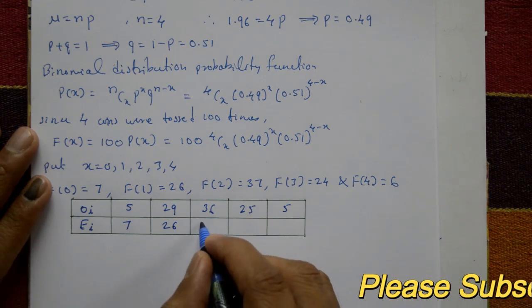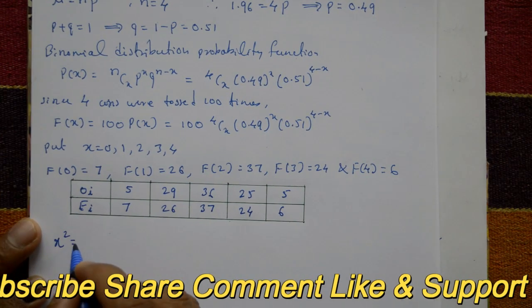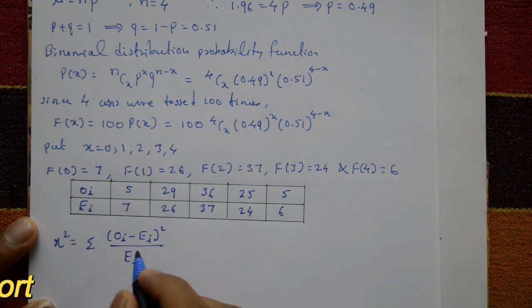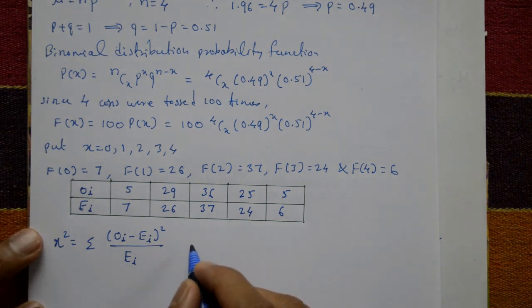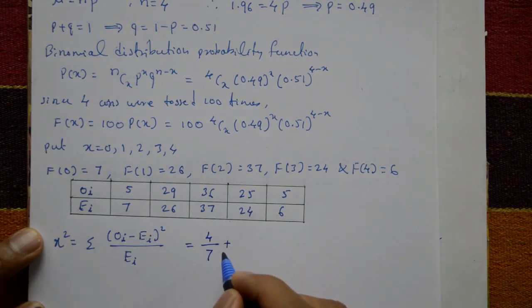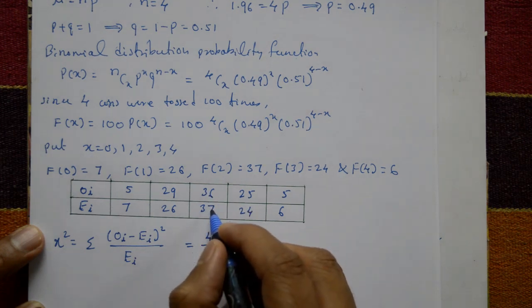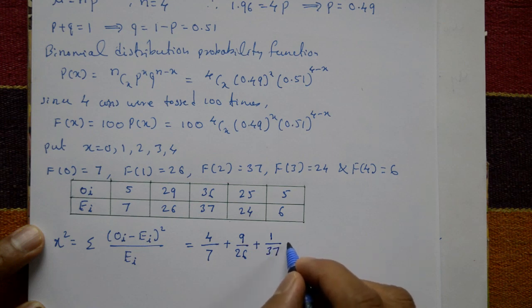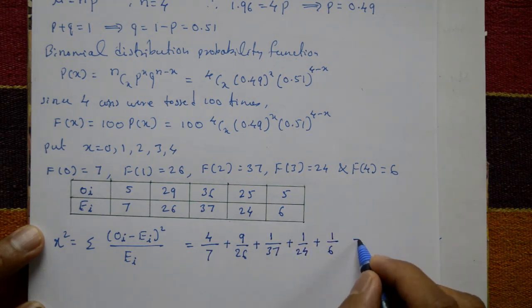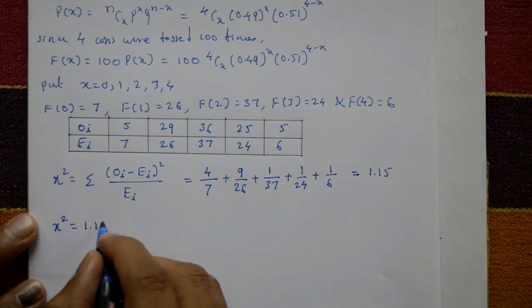Using the chi-square formula: chi-square equals summation of (Oi minus Ei) squared divided by Ei, for i equals 1 to 5. Calculating: (5-7)² / 7 + (29-26)² / 26 + (36-37)² / 37 + (25-24)² / 24 + (5-6)² / 6. Adding these gives chi-square equals 1.15.